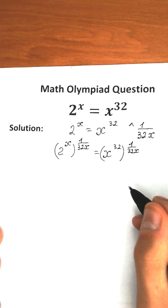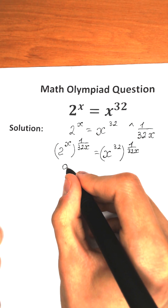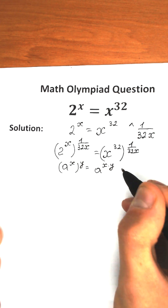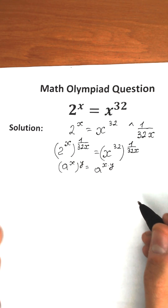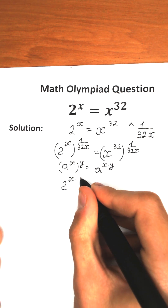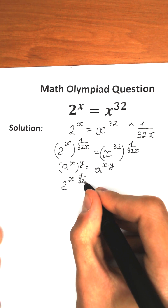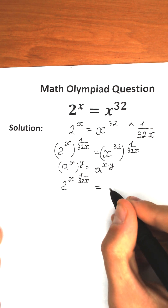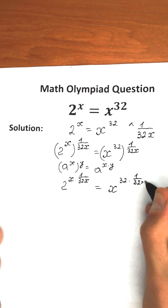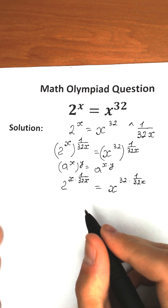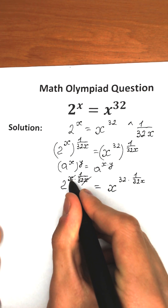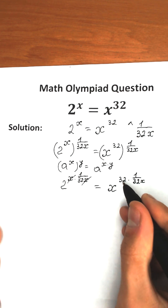Everyone knows a really great property: if we have a to the power x raised to the power y, we can write it as a to the power x times y — in other words we just multiply our powers. So on the left hand side we have 2 to the power x times 1 over 32x, and on the right hand side x to the power 32 times 1 over 32x. We can cancel the x on the left hand side and the 32 on the right hand side.